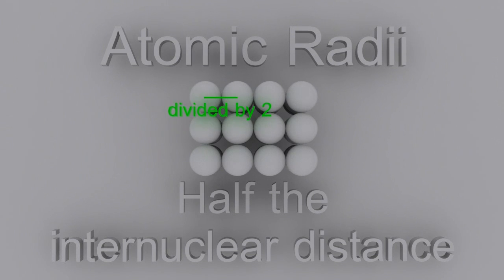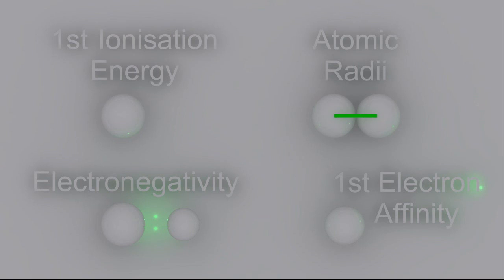Atomic radii - there's three ways to measure that, but you can say it's half the internuclear distance, half the distance between two bonded atoms' nuclei.